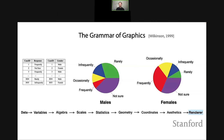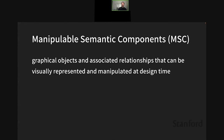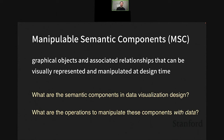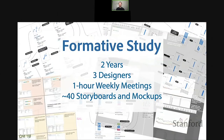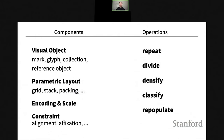It is unknown whether direct manipulation ideas can scale to many different visualization designs. We were interested in understanding whether we can develop a similar visualization grammar based on the direct manipulation paradigm. Our research question is about a framework for manipulable semantic components — graphical objects and associated relationships that can be visually represented and manipulated at design time. We want to understand what the semantic components in data visualization design are, and what operations can manipulate these components with data. To answer these questions, we conducted a two-year formative study with three different designers.